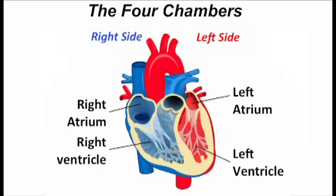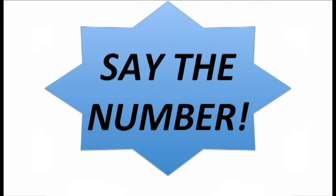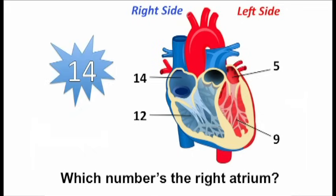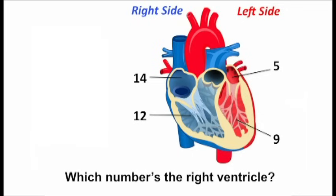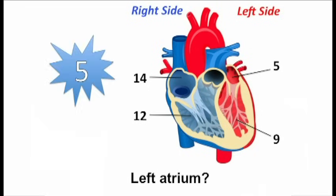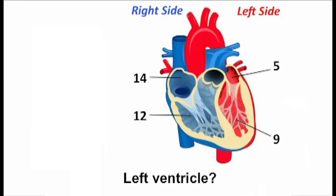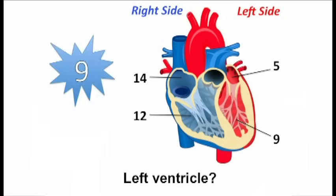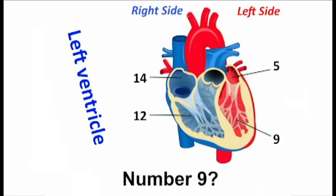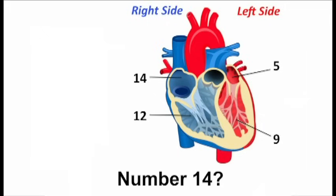Let's start with the chambers of the heart. Say the number. Which number is the right atrium? Hit pause. Which number is the right ventricle? Pause if you need to. Left atrium. Left ventricle. Name the part: number twelve, number nine, number fourteen, number five.